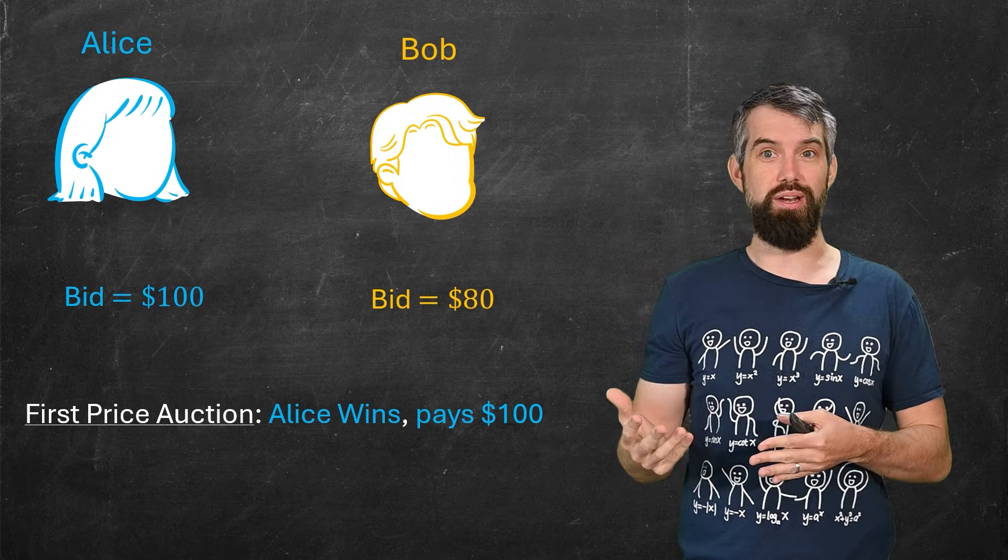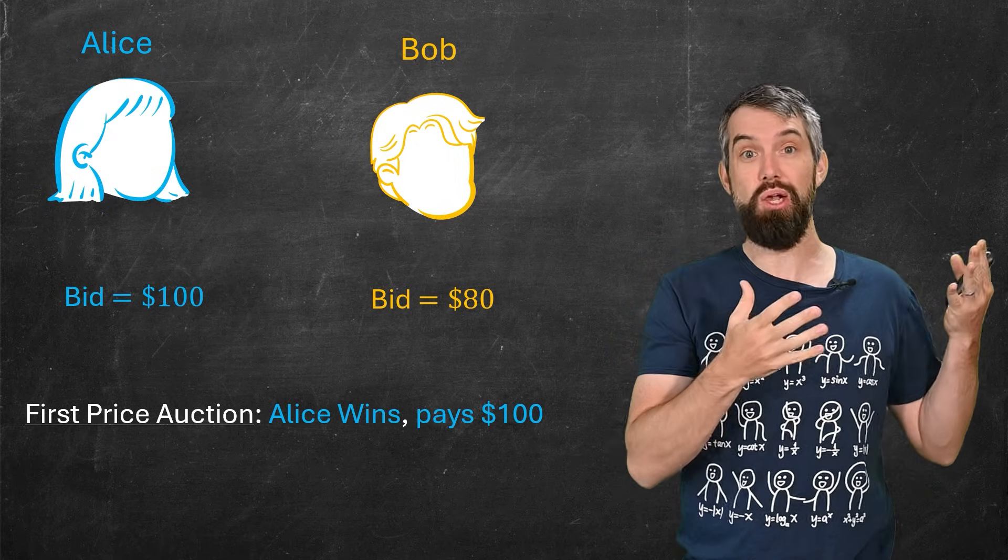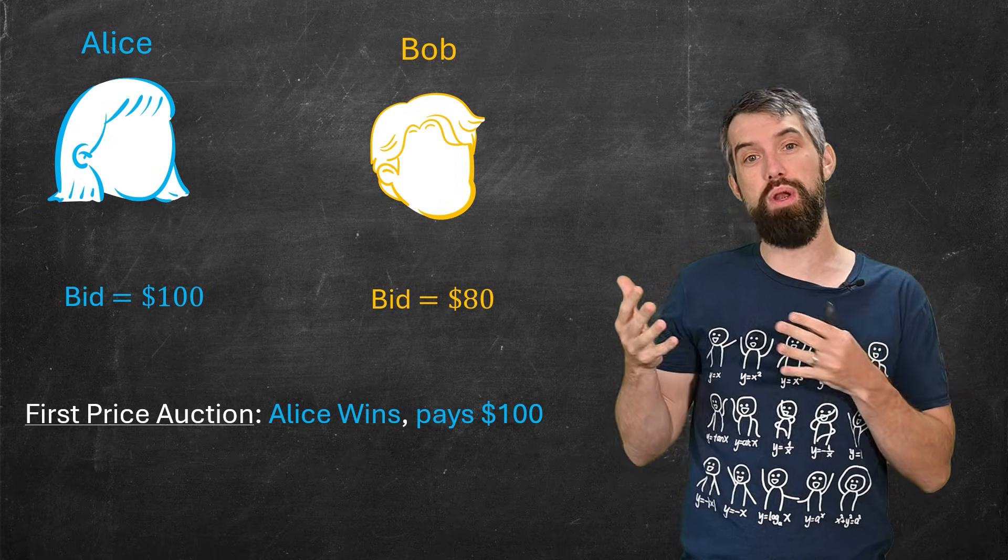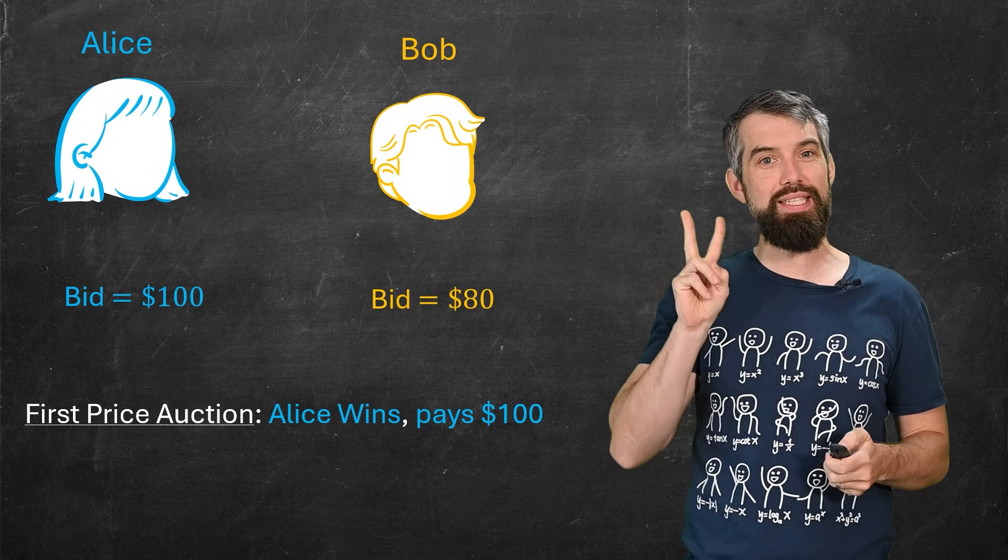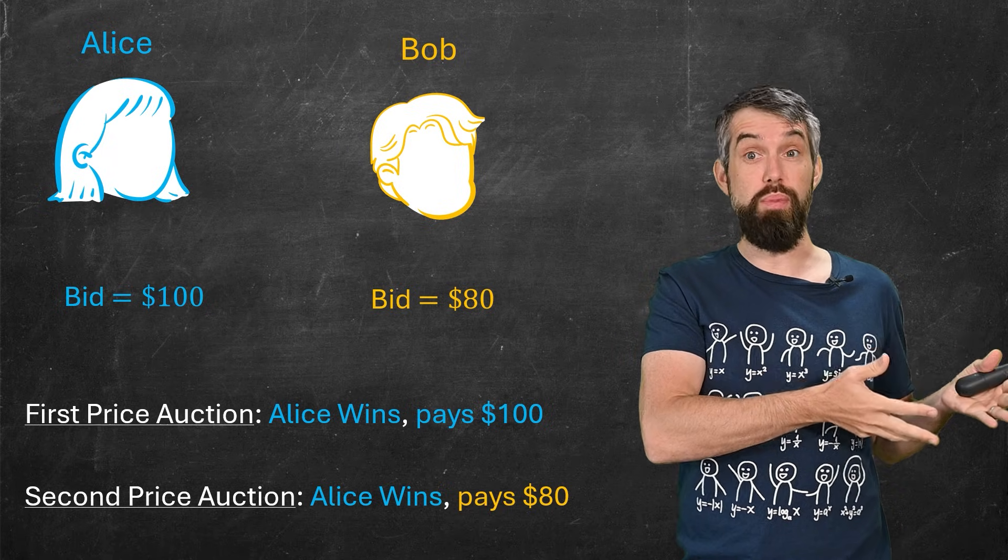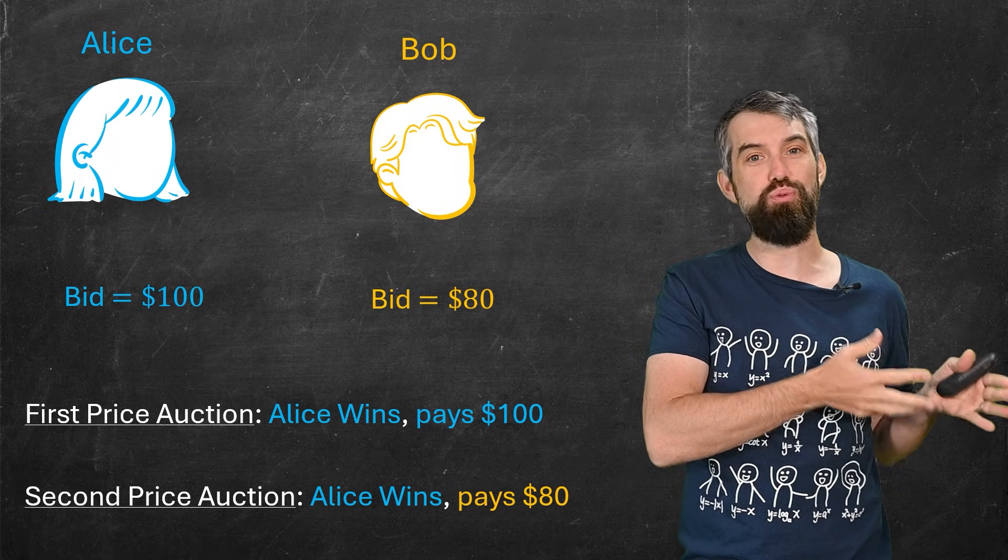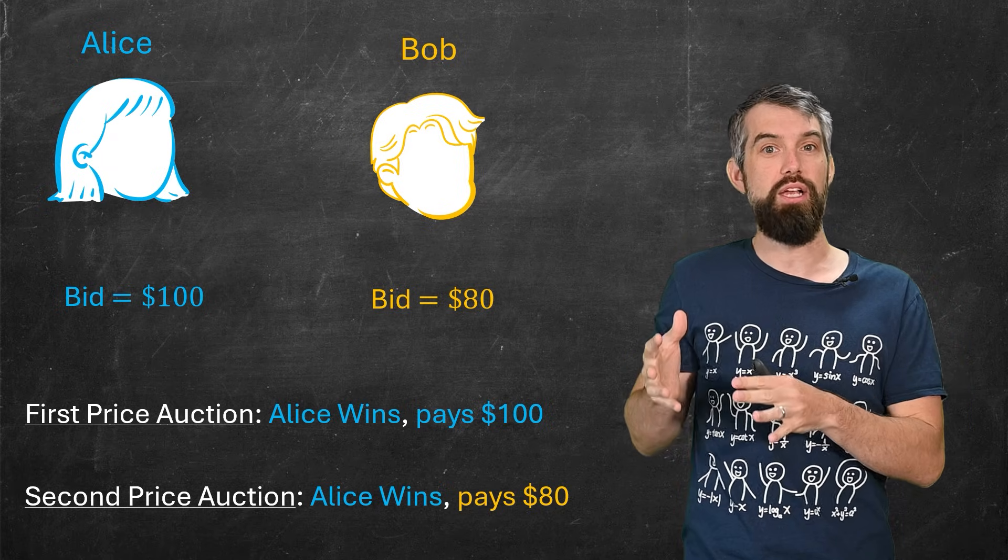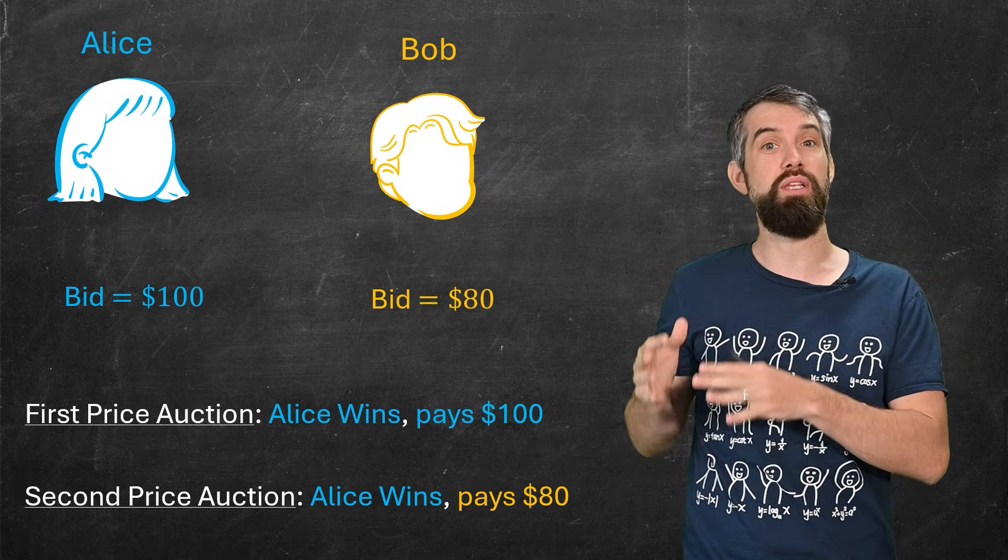In a first price auction, she bid $100, so Alice wins the auction and pays $100. But in a second price auction, Alice wins, she bid the most, but she only pays the price of the second bidder. She only pays the $80 that Bob bid.